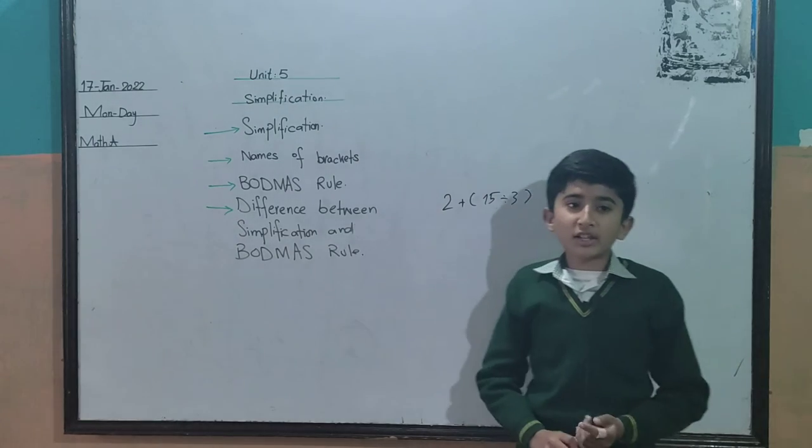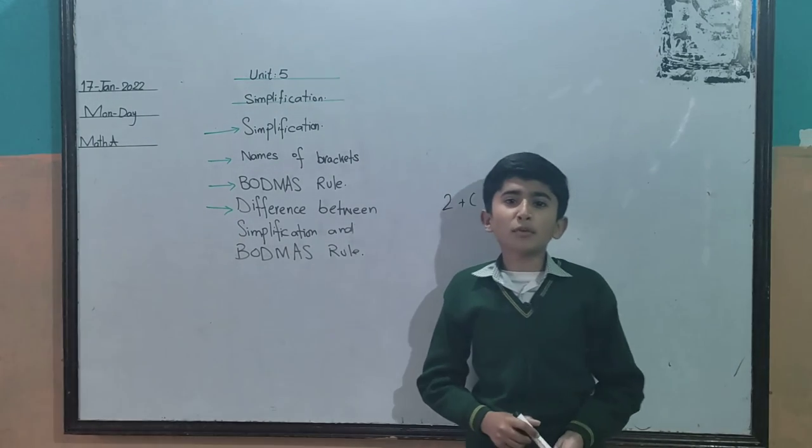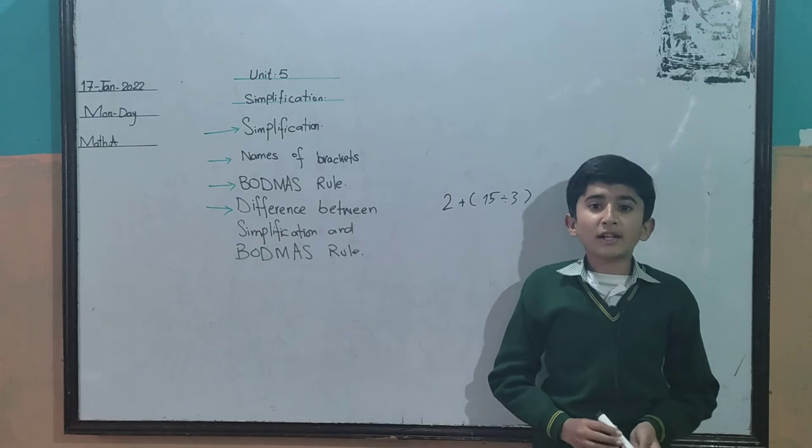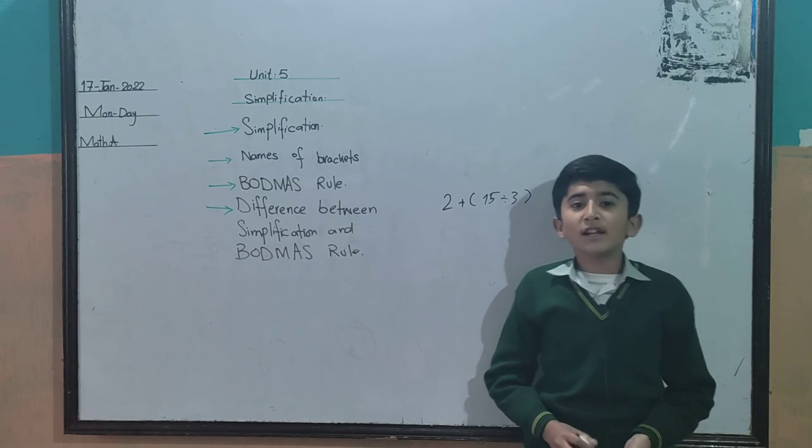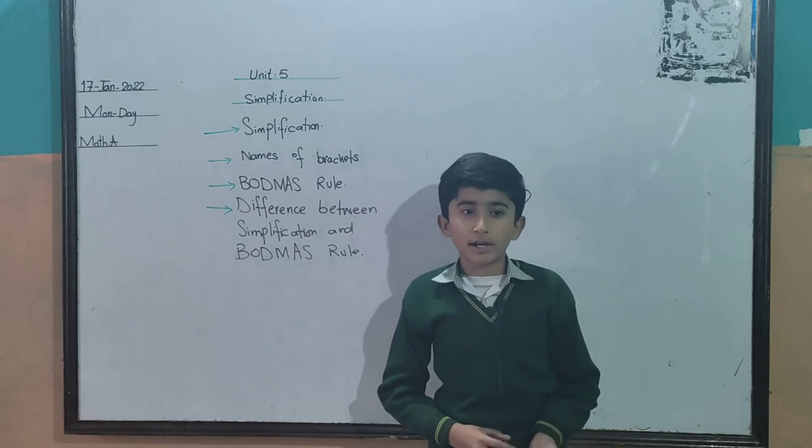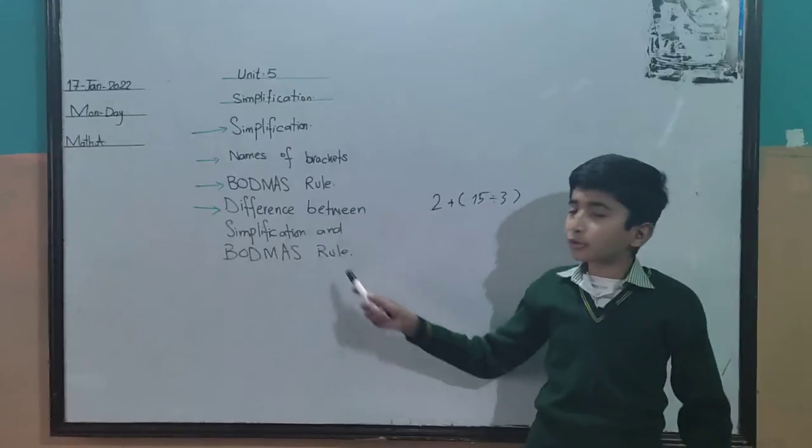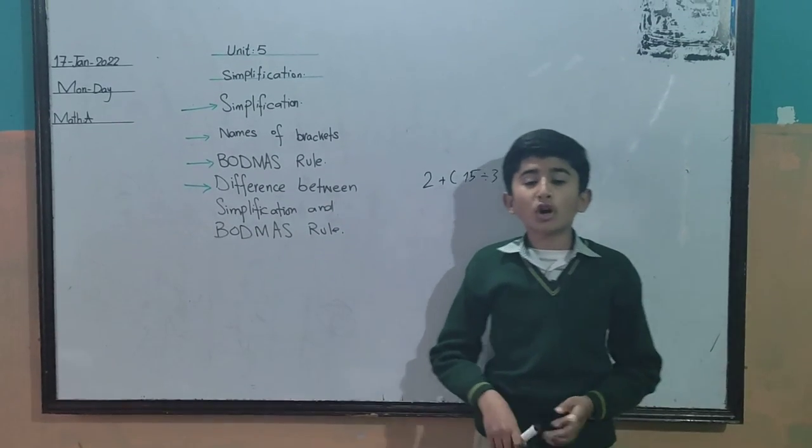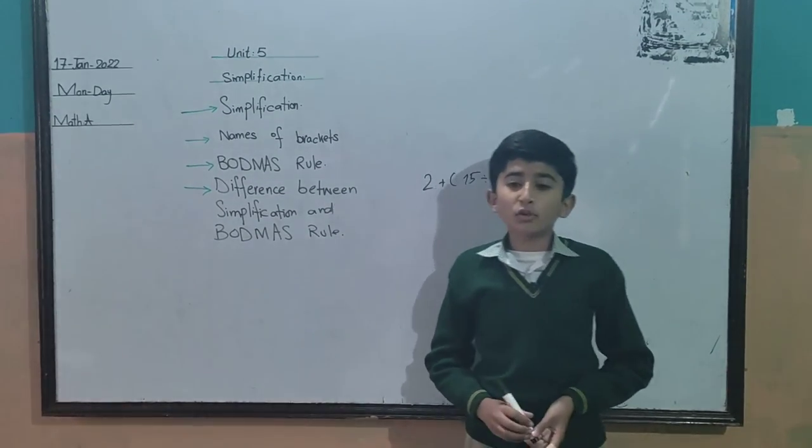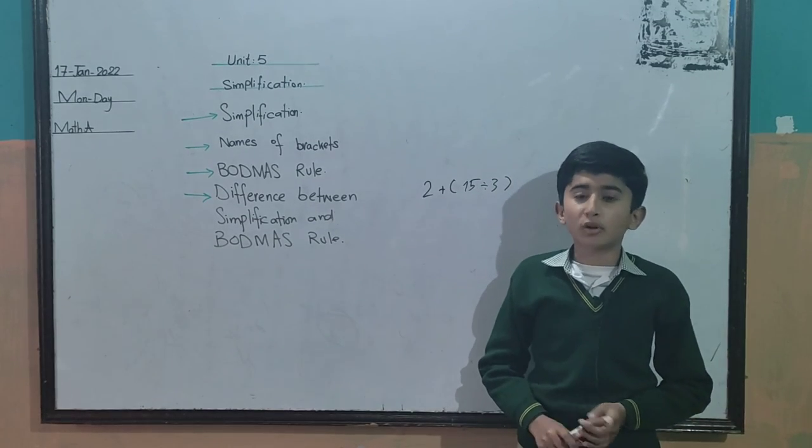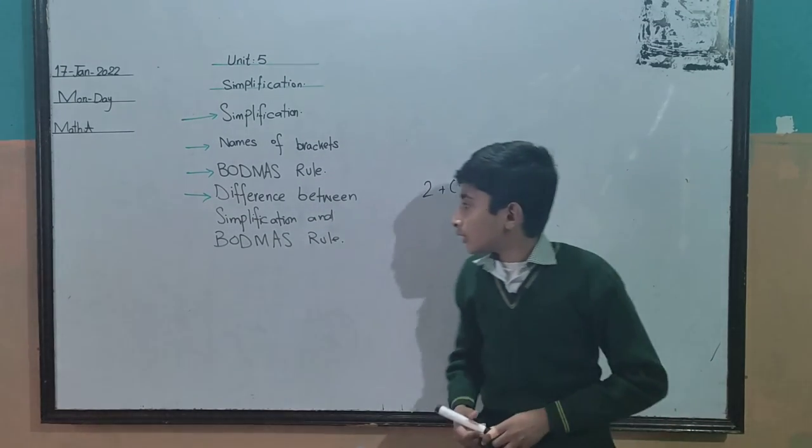Difference between simplification and board match rule. In simplification, in each bracket we have one operational sign and we solve the question left to right. And in board match rule, in each bracket we have two or more operational signs and we solve the question according to board match rule. Thanks.